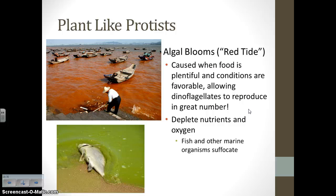Plant-like protists can cause things called algal blooms — you've probably heard of the red tide. Algal blooms are caused when food is plentiful and conditions are favorable, allowing protists called dinoflagellates to reproduce very quickly in a short amount of time. This depletes nutrients in the water, causing the food source to go down, which makes the algae die, depleting oxygen. All that algae gets into the gills of fish and other marine organisms, actually causing them to suffocate. So an algal bloom, while temporarily great for the protists, is very dangerous for marine organisms in that ecosystem.